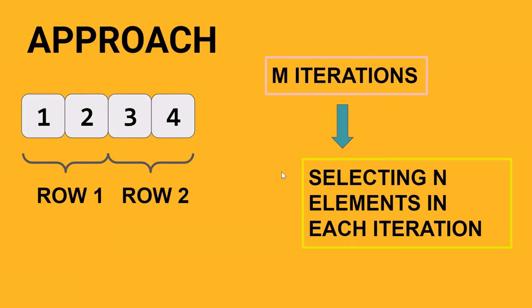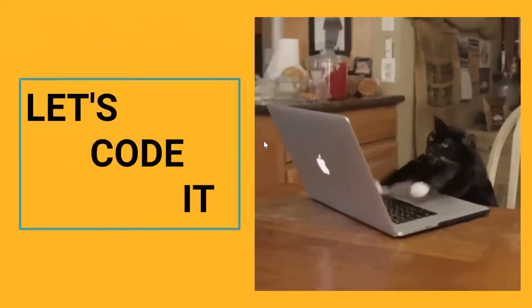You will have two iterations, which are M — two rows — so two iterations over the one-dimensional array. And in each iteration you will pick up two elements, which are N — two columns. So you will pick two elements in each iteration. I hope it is clear. Let's see how to code this problem.